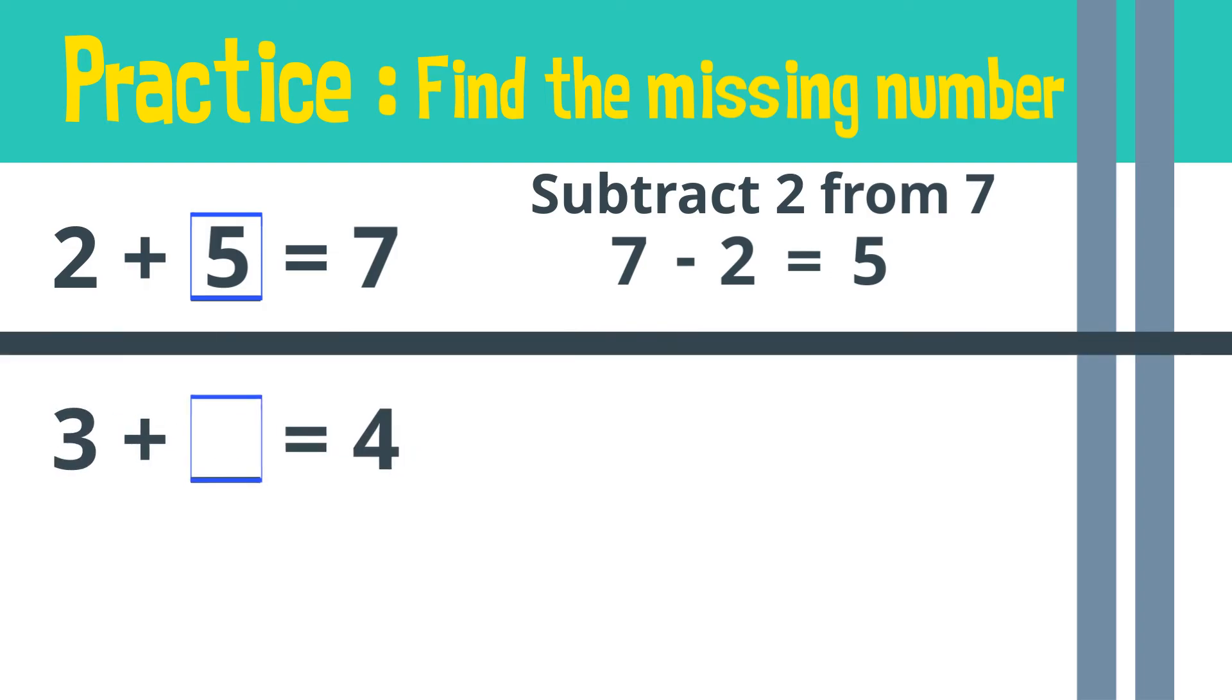Three plus what number equals four? Again, just subtract three from four. Four minus three is equal to... That's right! The answer is one.